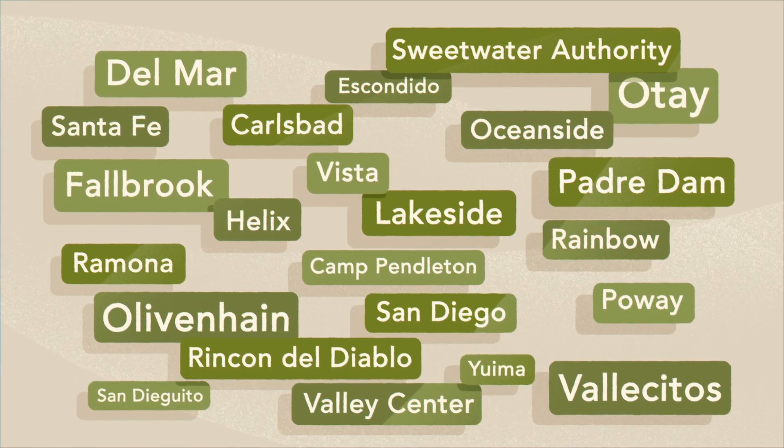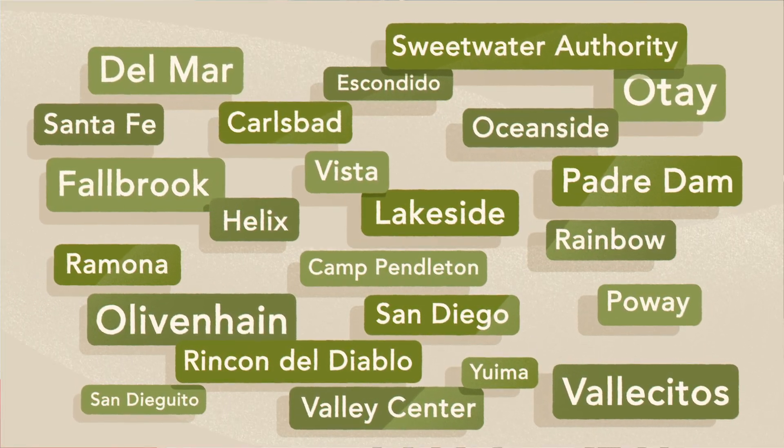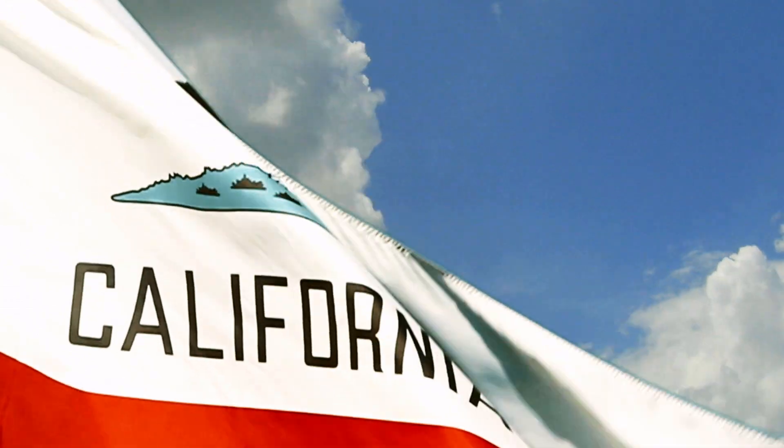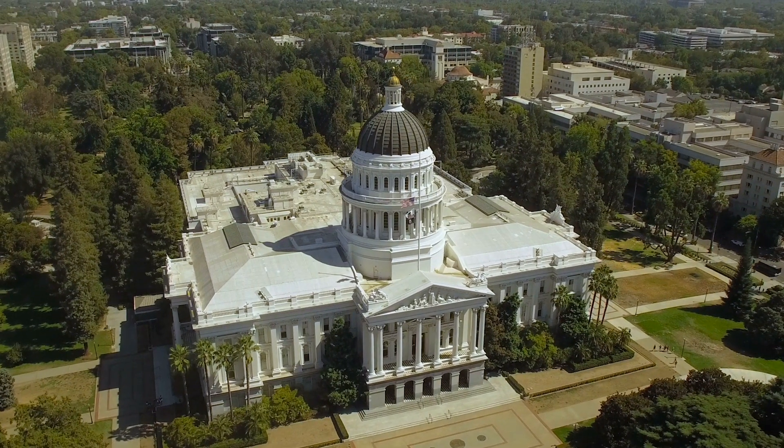We coordinate with the Water Authority's 24 member agencies in preparation of the plan and must submit the plan to the State of California every five years.